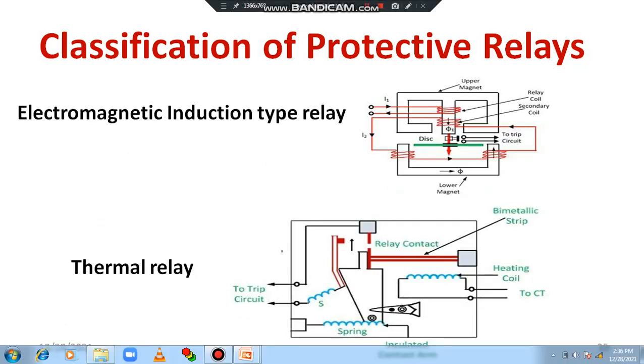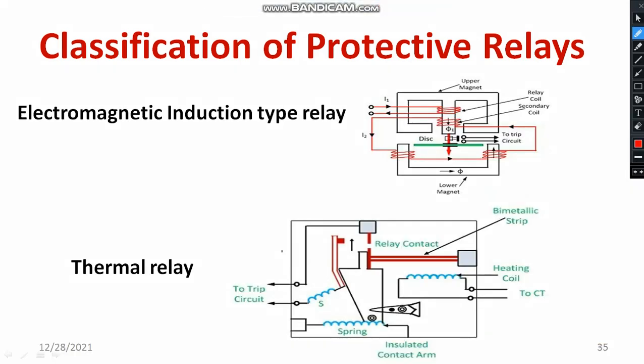The induction type relay works similarly to an energy meter. We have two types of magnets — an upper magnet and a lower magnet. The flux linking in the upper layer is φ1 and the flux induced in the lower layer is φ2. Based on the difference in flux, an aluminum disk rotates. This aluminum disk is directly connected to the trip circuit, whereby the trip circuit is activated. This works based on the electromagnetic induction principle.